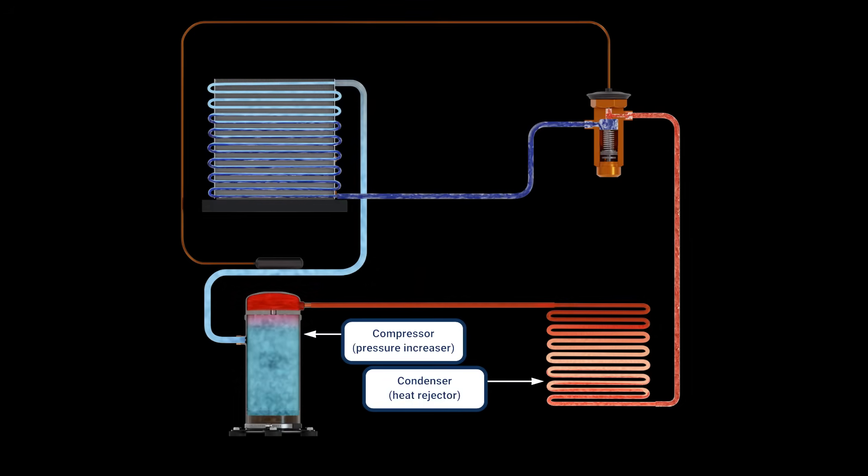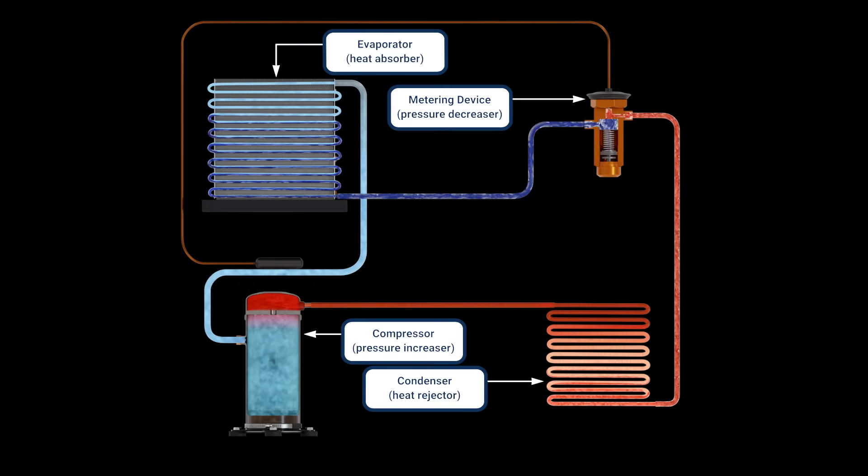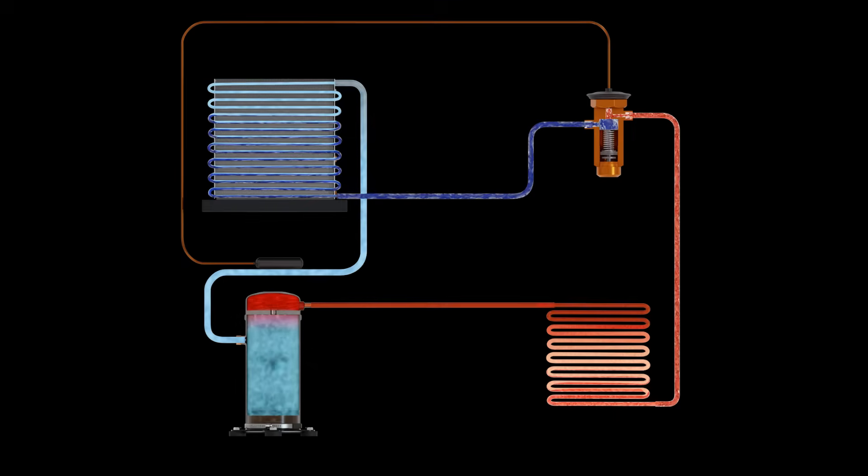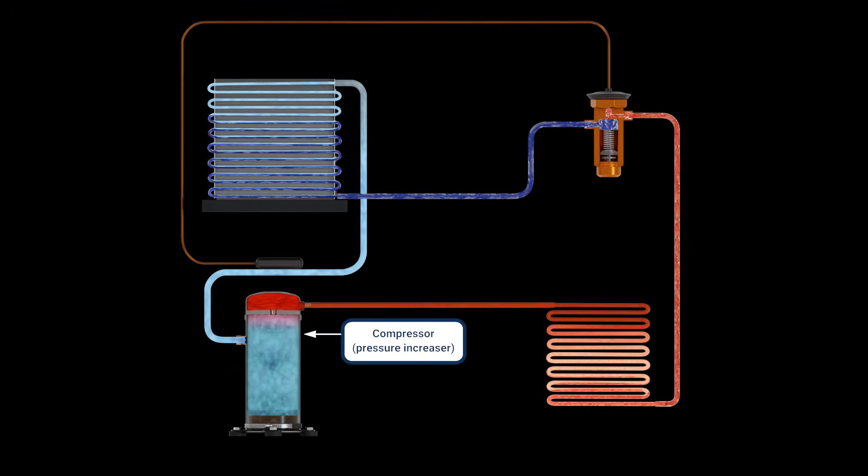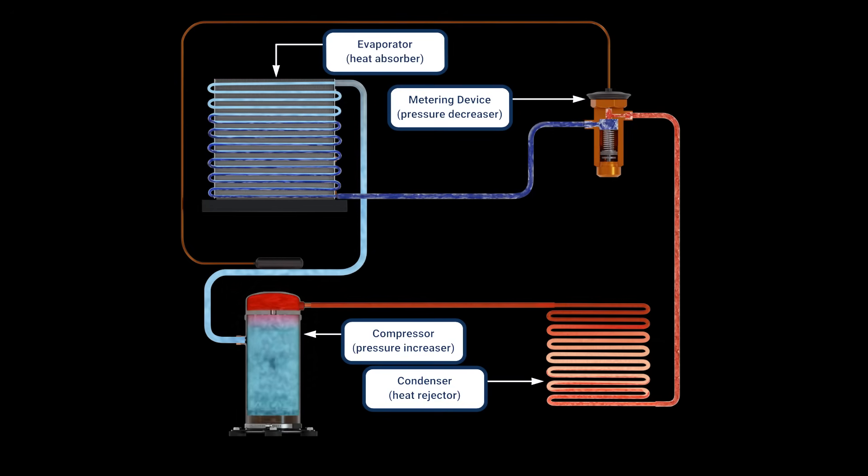The condenser is the heat rejector, the metering device is the pressure decreaser or the pressure dropper, and the evaporator is the heat absorber. So one more time, compressor is the pressure increaser, condenser is the heat rejector, the metering device is the pressure decreaser, and the evaporator is the heat absorber.